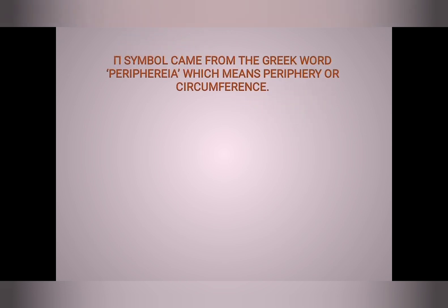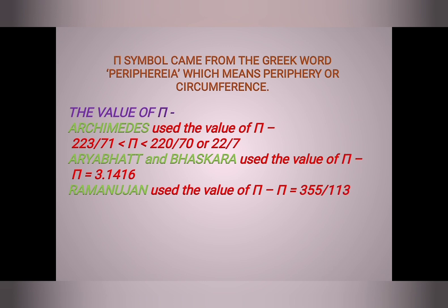The pi symbol came from the Greek word 'peripheria' which means periphery or circumference. Archimedes used the value of pi: pi is less than 223/71 and greater than 220/70, or 22/7. Aryabhatta and Bhaskara used the value of pi as 3.1416. Ramanujan used the value of pi as 355/113.